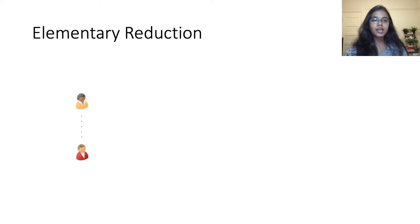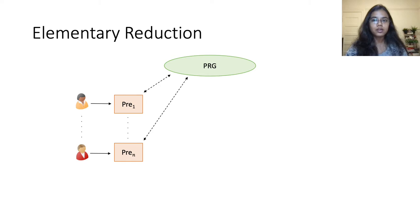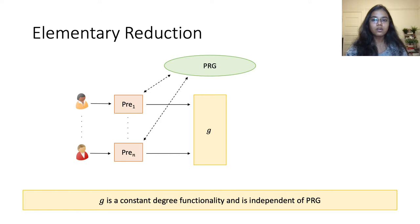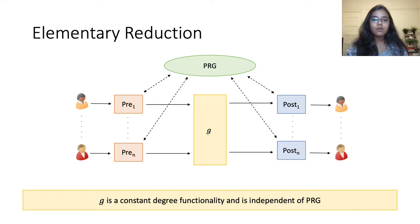Pictorially, an elementary reduction looks like the following. The parties run some local pre-processing on their inputs, and this pre-processing function can make oracle queries to a PRG. The parties then send the output of the pre-processing functions to the oracle G. Given the output of G, the parties do some local post-processing to learn the final output. Note that while the pre-processing and post-processing functions are allowed to make oracle queries to the PRG, oracle G is completely independent of it.